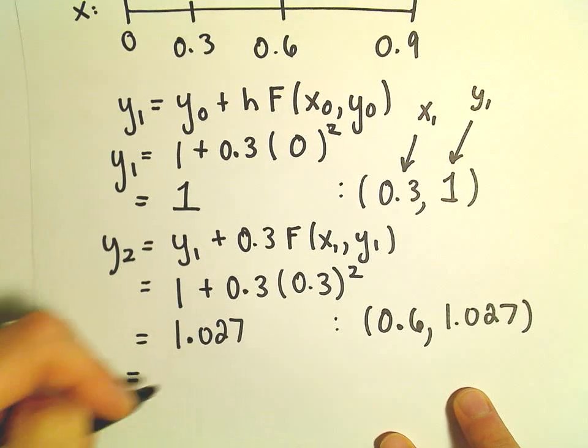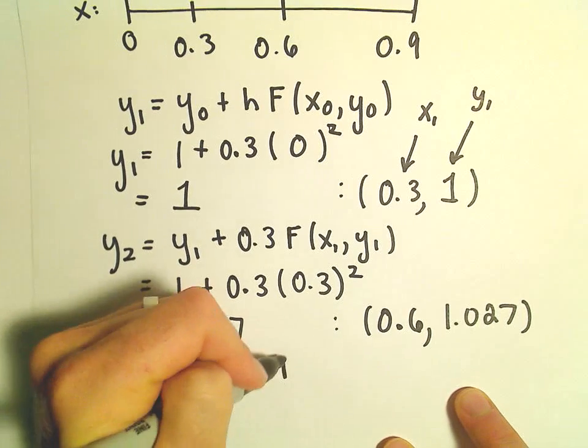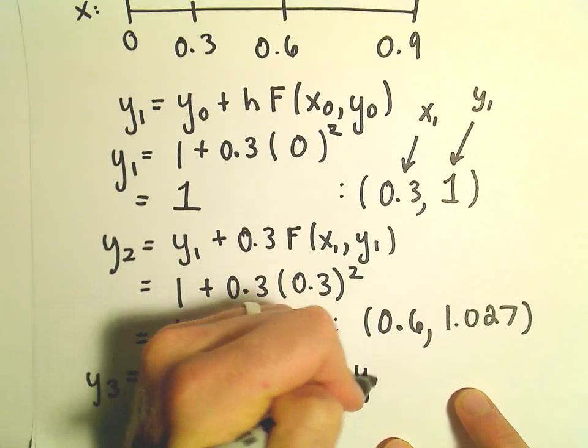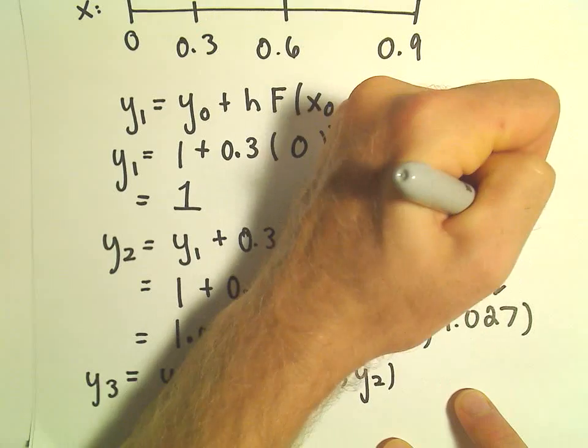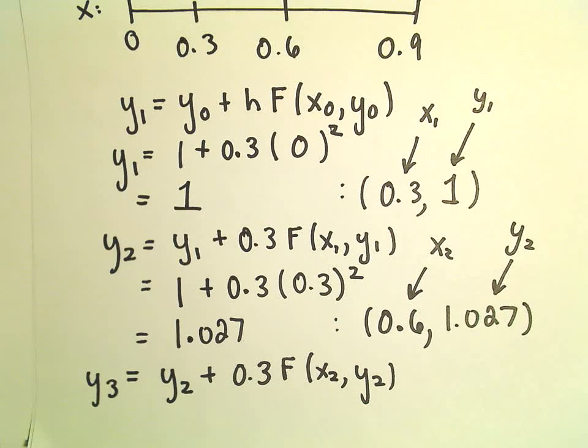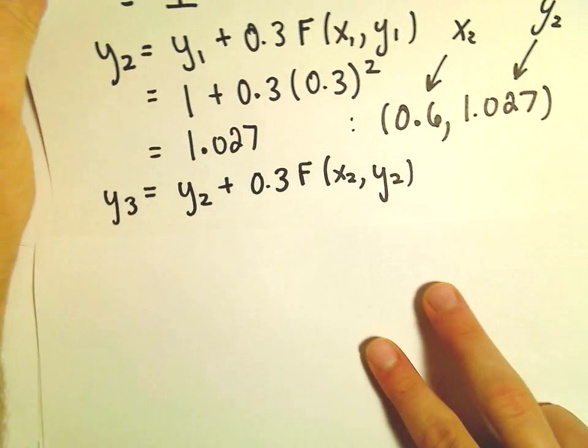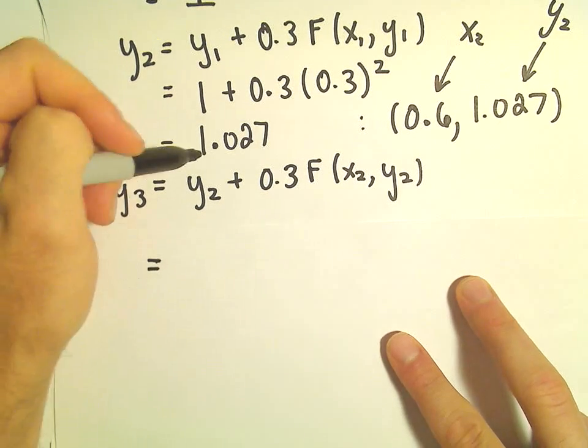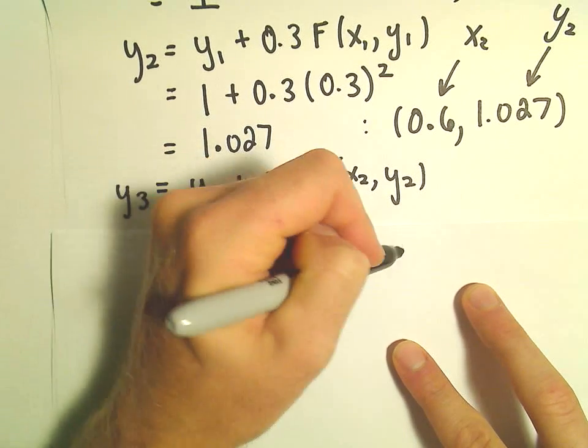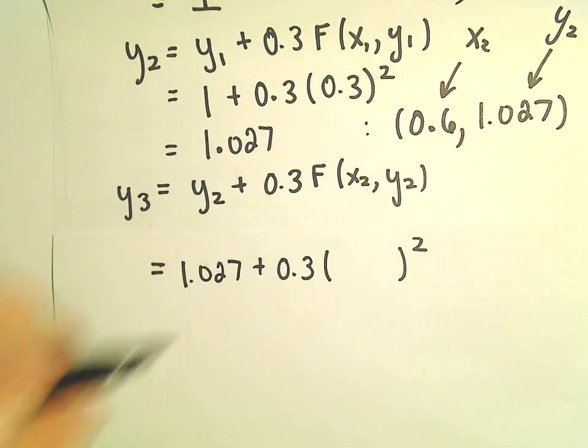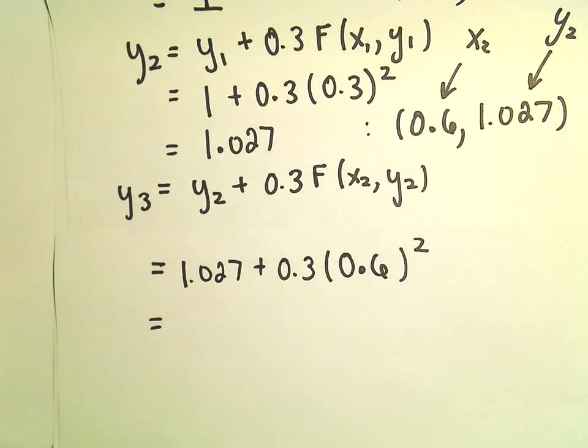So our third approximation is going to be y sub 2, again, plus the step size 0.3, f of x sub 2, y sub 2. Again, this is going to be x sub 2. This is going to be y sub 2. So I'm going to plug all those numbers in there. So y sub 2 is 1.027 times 0.3. Again, our derivative only involved x squared. So we'll plug in 0.6. And now we can simplify this.